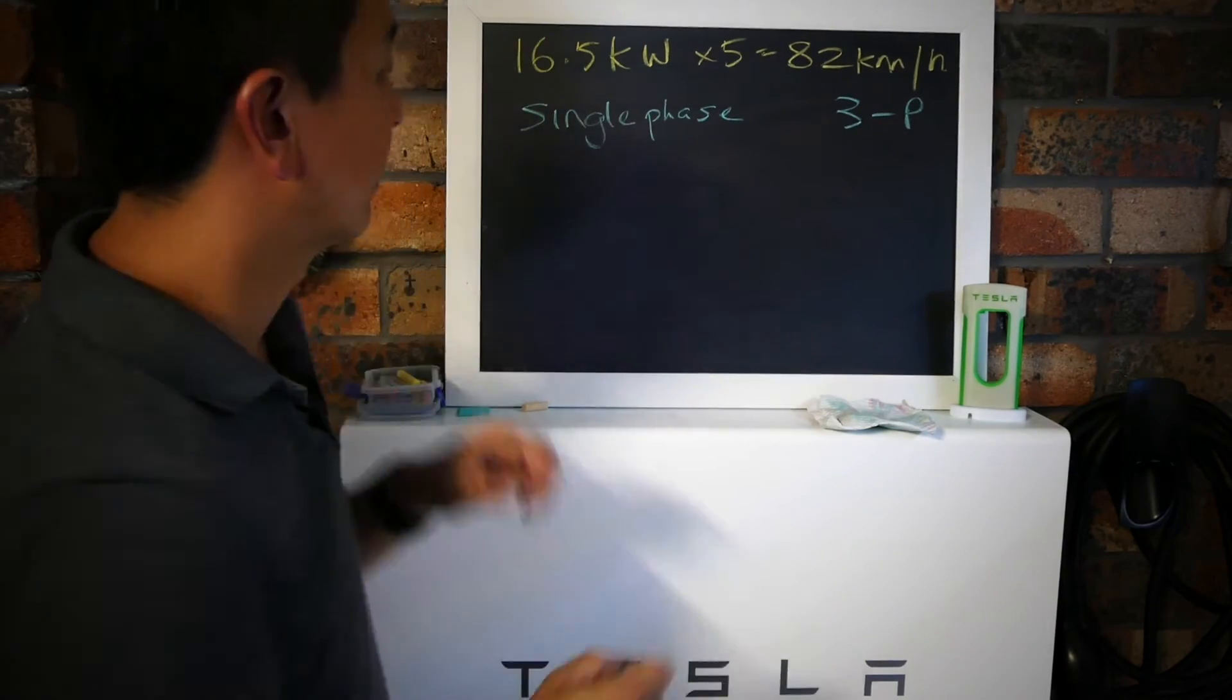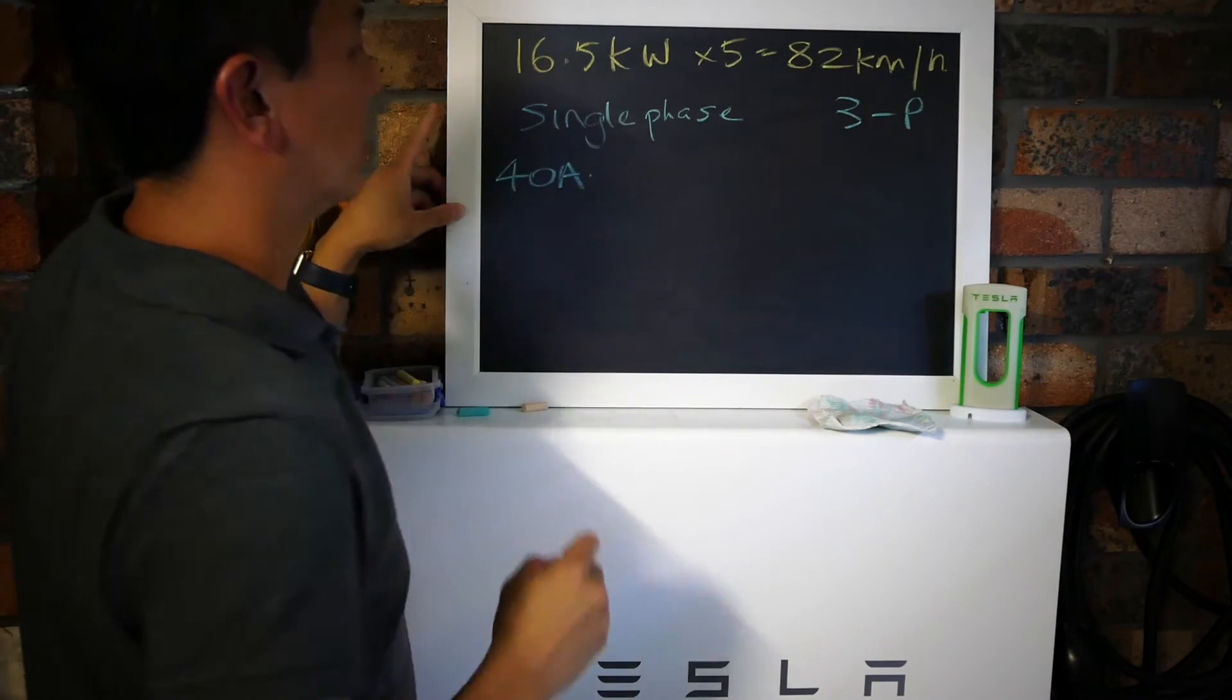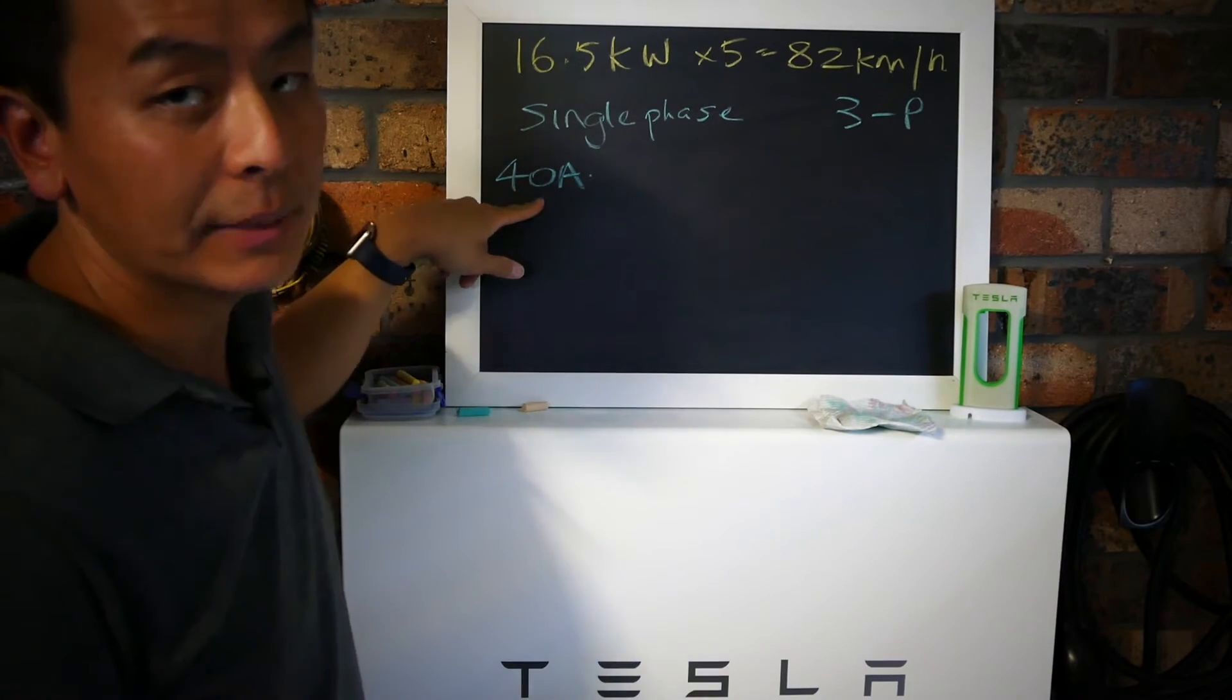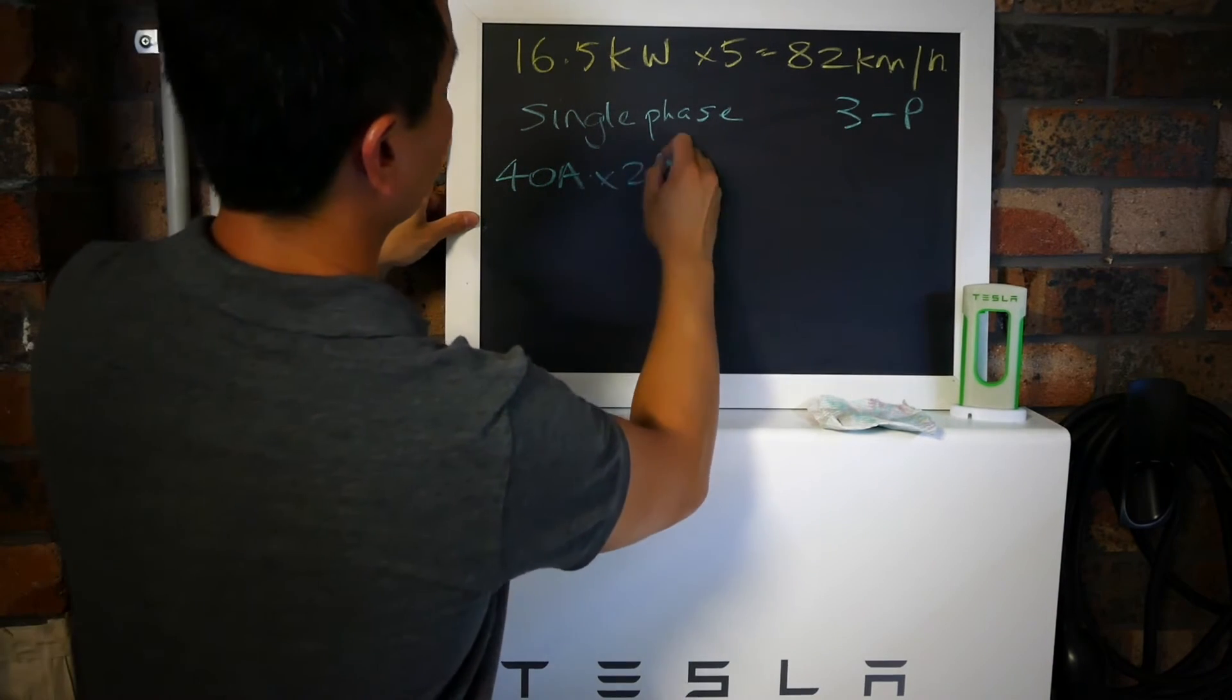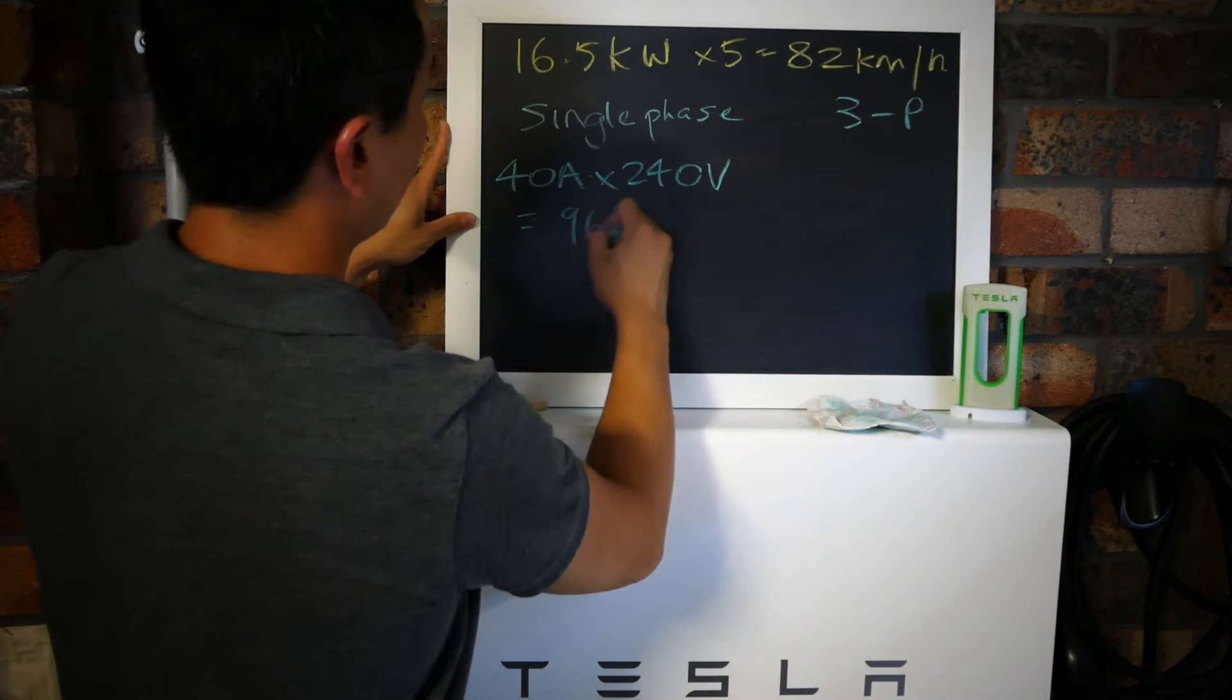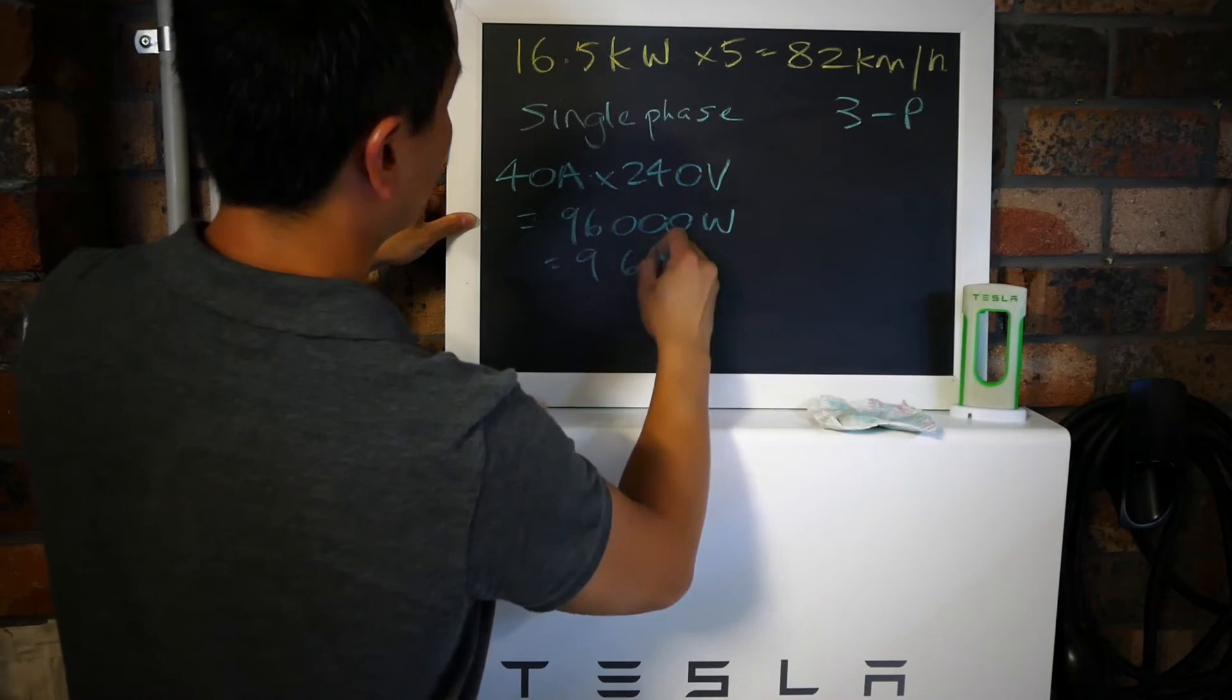If you have a single phase, the maximum amps you will get is 40 amps, whether your home is single phase or triple phase. The maximum voltage you get is 240 volts.